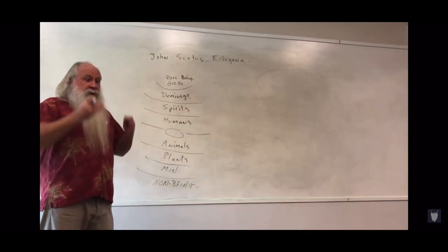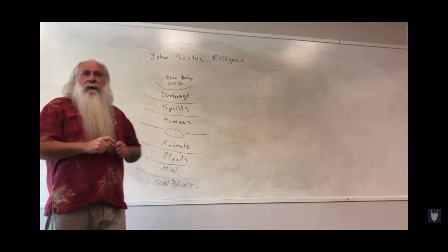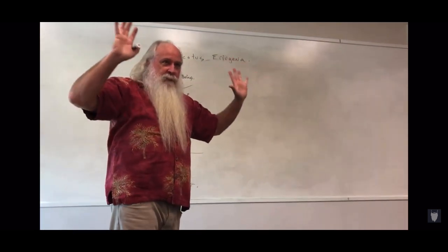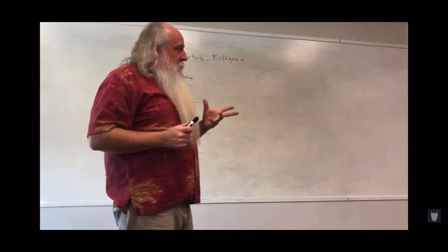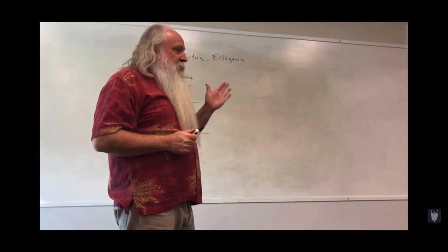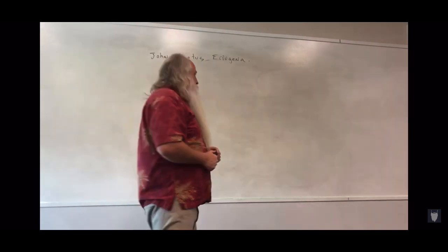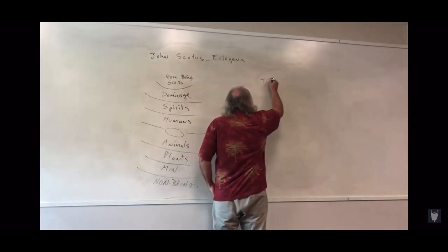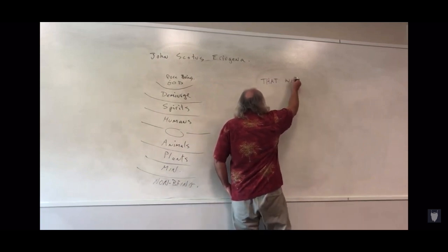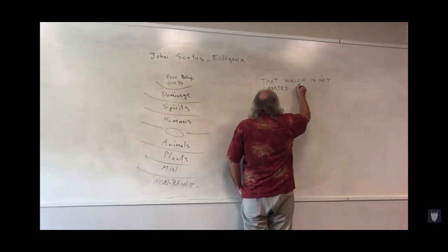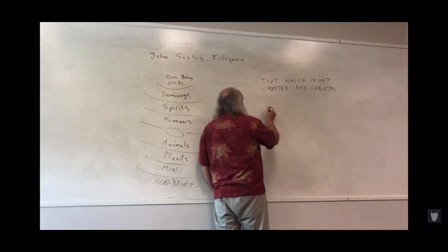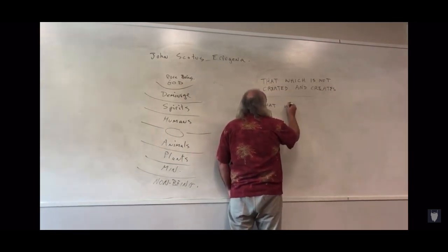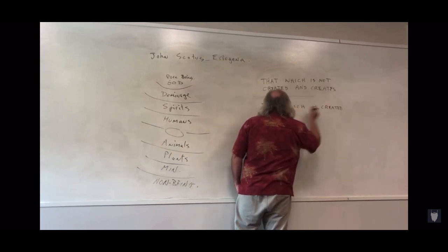John Scotus, in reading this work, it completely blew the top off of his mind and his understanding of God and the scriptures. And so he begins to talk about, he writes a book called The Divisions of Nature. And the first division is, that which is not created and creates. The second division of nature is, that which is created and creates.